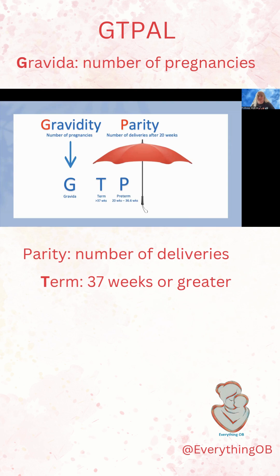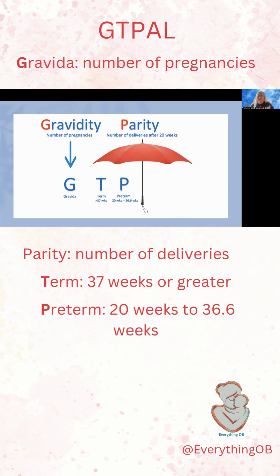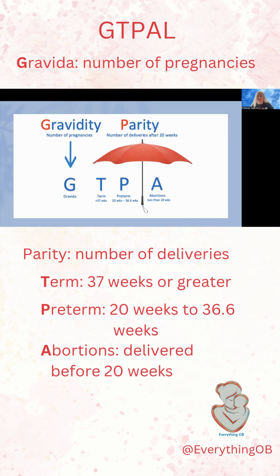How many preterm deliveries has she had? Preterm deliveries are from 20 weeks up to 36 weeks and six days. These two make up our parity, but in this umbrella we also consider the other parts of her obstetric history: how many abortions she has had — this can be spontaneous abortions like a miscarriage, or a termination. Any pregnancy that ends less than 20 weeks is called an abortion. And then we look at how many children she has currently living. This is what makes up our GTPAL.